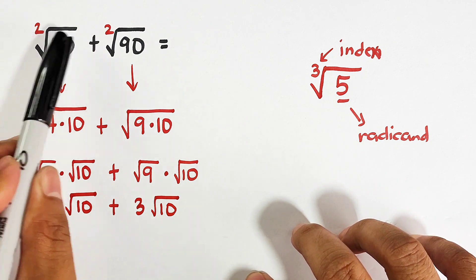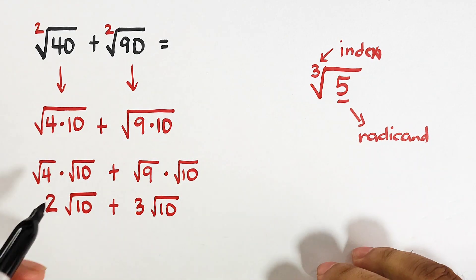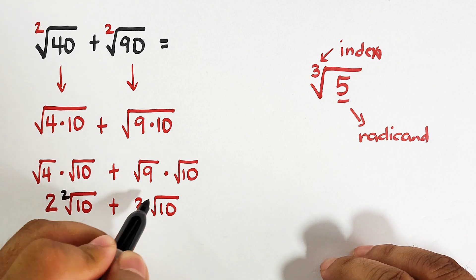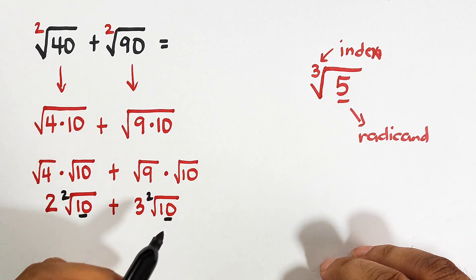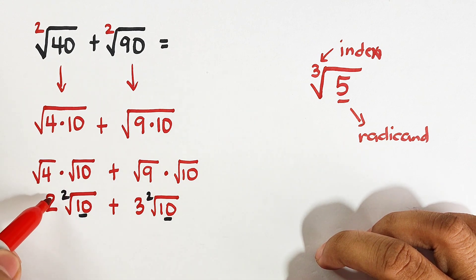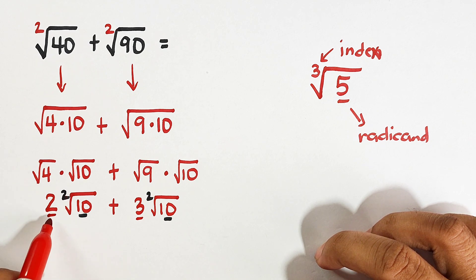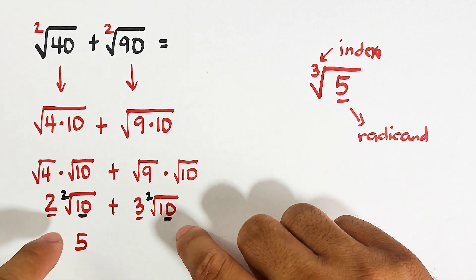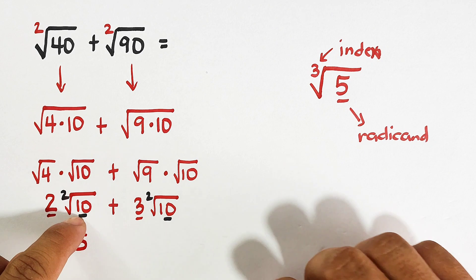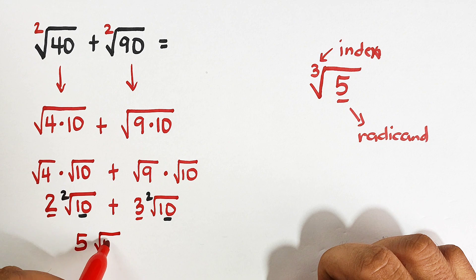Earlier they had the same indices but different radicands. Now look — we have the same indices and the same radicand, so we can add them. What we need to do is add the coefficients outside the radicals: 2 plus 3 equals 5. Since they have the same radicand, we simply copy and write the square root of 10.